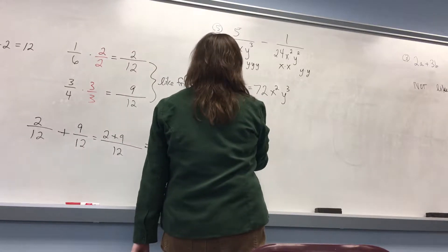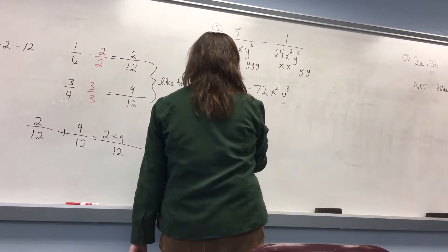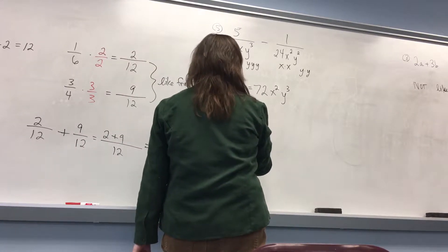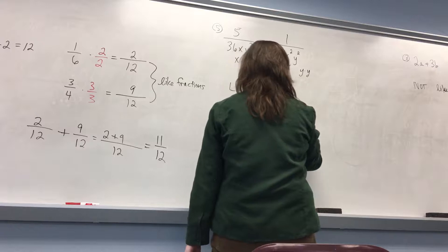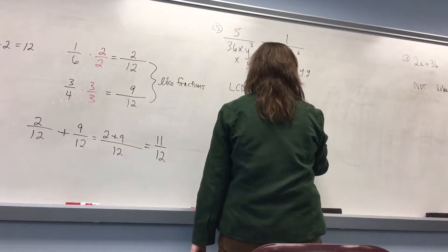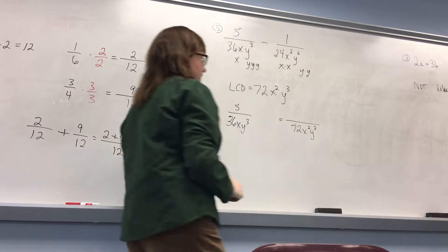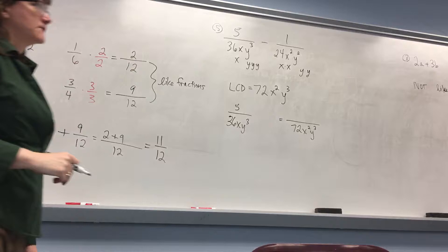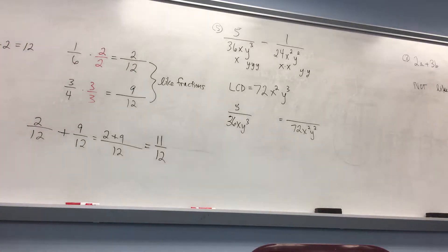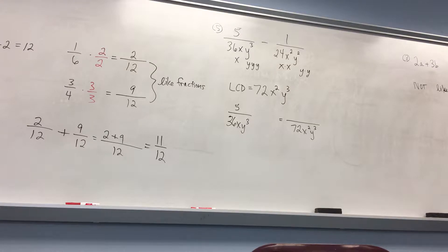So I have 5 over 36xy cubed. I'm going to leave a little space and write the denominator that I want. Then we look and see what can I multiply by the denominator I have to get to the denominator I want.